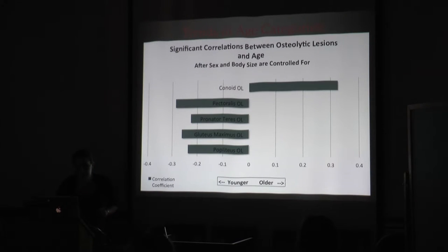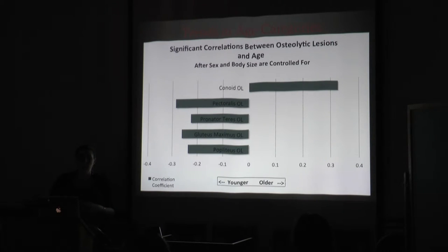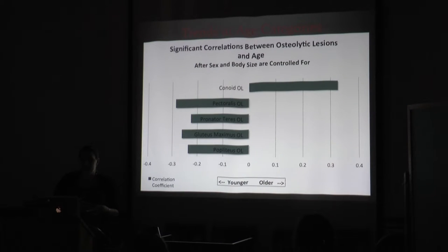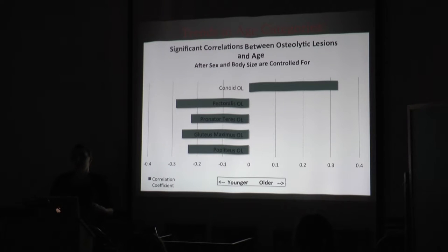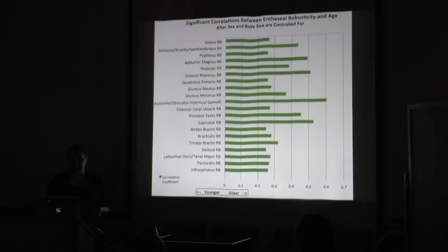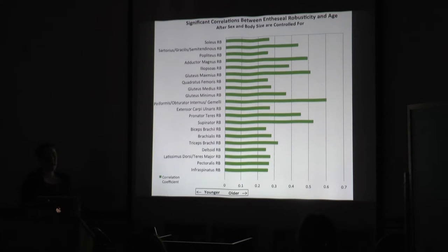Early young adults are notable for having the lowest entheseal robusticity scores for any age group, while simultaneously holding four out of the five significant correlations with the stress lesions. This data supports recent studies which have suggested that stress lesions on entheses are not part of a continuous spectrum of robusticity, as was previously thought. Nothing significant correlated with the late young adult group.